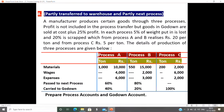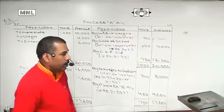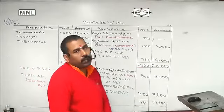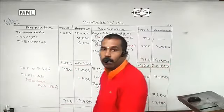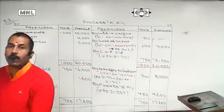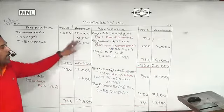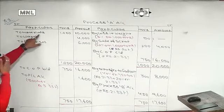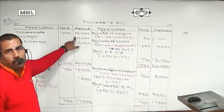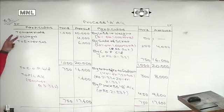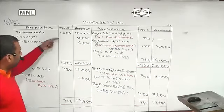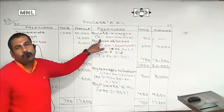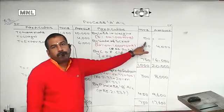Now let us go to the board. We were talking about output being partly transferred to the next process and partly to the warehouse or godown. The first process has been done. We have used material of 1,000 tons, with a value of 10,000. Other expenses include wages and expenses. Total input is 1,000 tons, with a 5% normal loss, which is 50 tons.